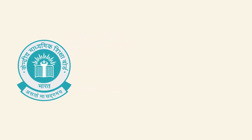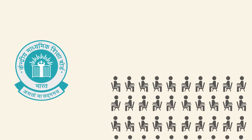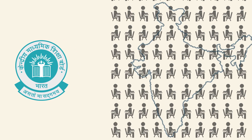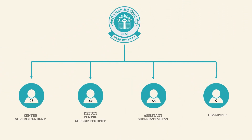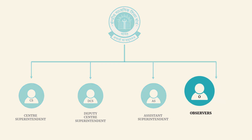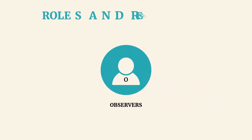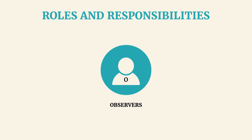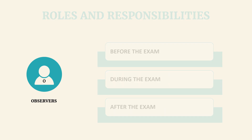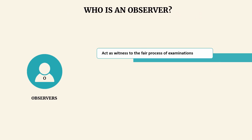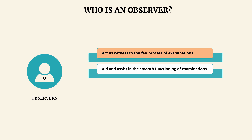The Central Board of Secondary Education or CBSE conducts examinations for thousands of students across the country every year. The board appoints different personnel to ensure the smooth and fair conduct of these examinations. In this video we will take a look at the roles and responsibilities of an observer during the course of an examination. The board deputes public representatives as observers who act as witnesses to the fair process and also aid in the functioning of these examinations.